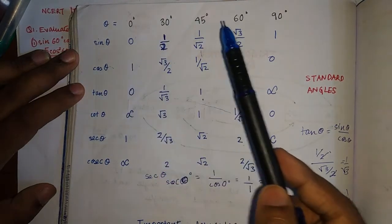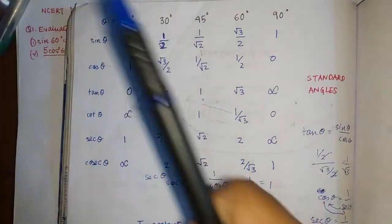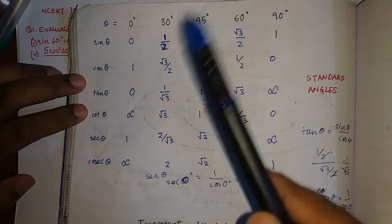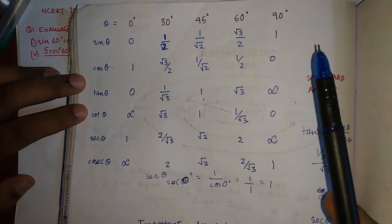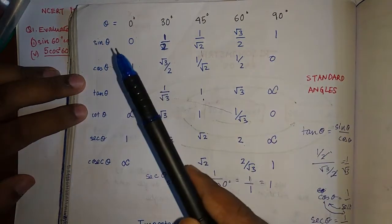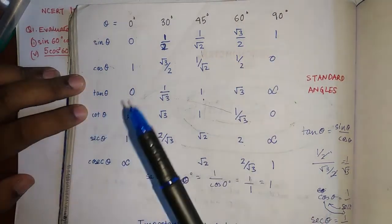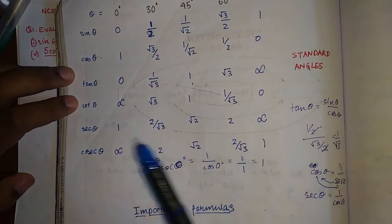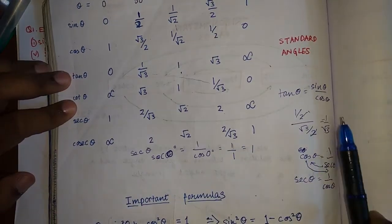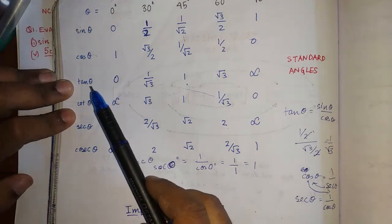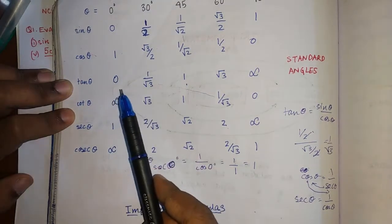When finding cosine of the standard angles, you just need to reverse the sine values. For example, if sine 90° = 1, then cos 0° = 1; if sine 30° = 1/2, then cos 60° = 1/2. For tan θ, write it as sin θ / cos θ. So tan 0° = sin 0° / cos 0° = 0/1 = 0.